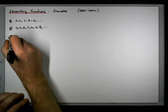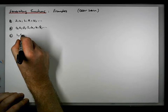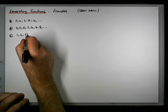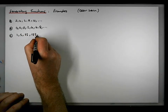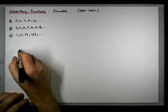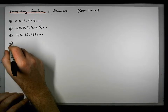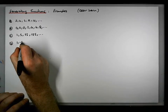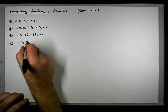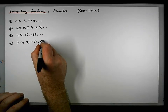C is the sequence that looks like 1, followed by 5, followed by 25, followed by 125, and so on. D is the alternating sequence: 1, minus 3, 9, minus 27, and 81, and so on.